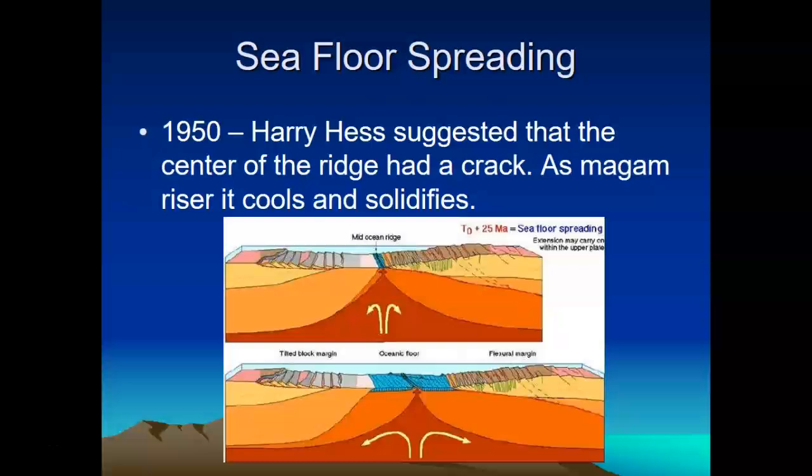Harry Hess is the one who suggested that the center of the ridge had a big crack in it, and the magma would rise, cool, and solidify, making new crust by the Mid-Oceanic Ridge. This crack actually runs all along the earth, but we'll mostly focus on the Atlantic Ocean portion, where we can get some good evidence.